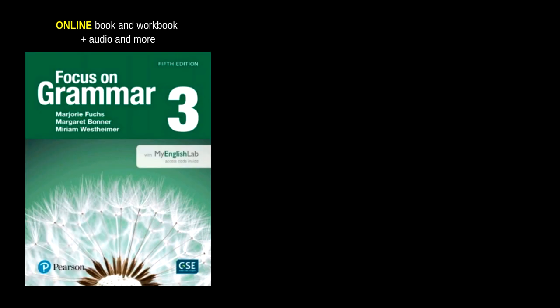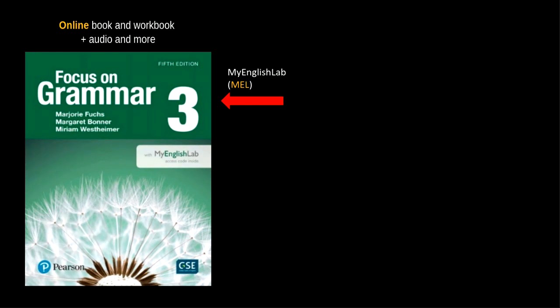Now let's talk about your materials. The online book and workbook, Focus on Grammar 3, 5th edition, is available as My English Lab — that means entirely online. If you get My English Lab, you have a lot of things: you have the audio, you have the online workbook, you have practice tests, but you only have it for a year. It's less expensive than the physical book, but you don't get to keep it.